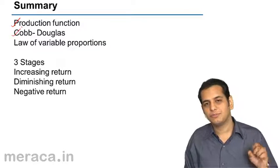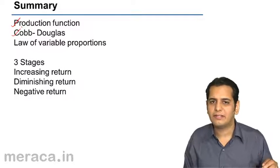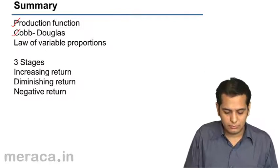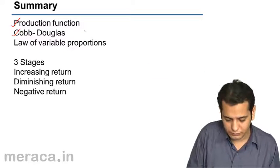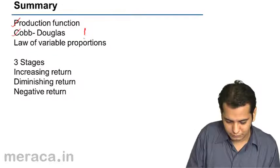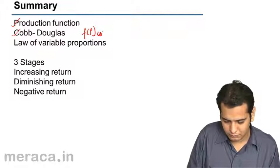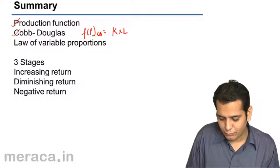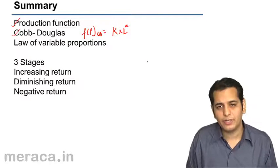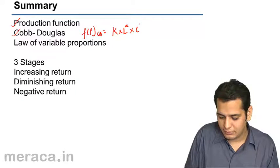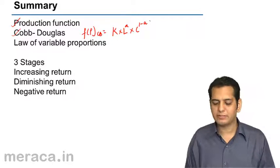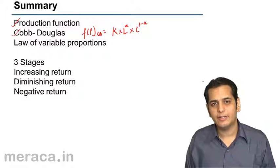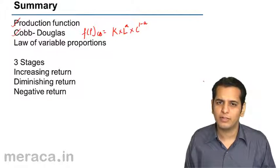Then we've done the production function which was invented by Cobb and Douglas. The production function that they invented was k into L raised to a into C raised to 1 minus a, where k and a both are positive constants and a is always between 0 and 1 as a value.